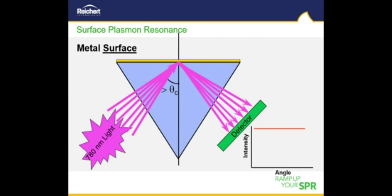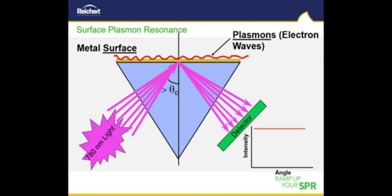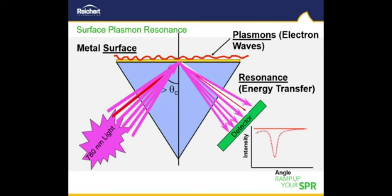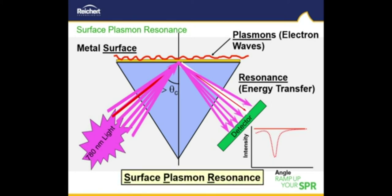An electric field intensity or evanescent wave is created as the light impinges on the chip, penetrating into the gold surface and being absorbed by the free electron density clouds of the gold metal. This interaction generates oscillating electron density waves bound to the gold chip surface called plasmons. This resonance effect causes a reduction in the reflected light intensity with an energy minimum occurring at a specific resonance angle. This resonance angle is in turn sensitive to changes in refractive index occurring above the gold chip surface — hence the name surface plasmon resonance, or SPR.